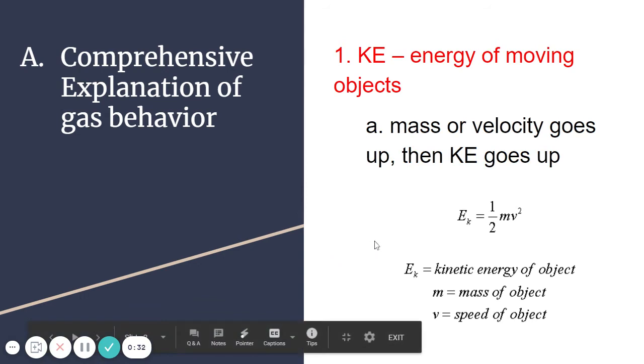We can calculate how much kinetic energy they have through the equation you see here. One half the mass times the velocity squared. We can calculate the energy, or vice versa. If we want to know how fast something is moving, we can rearrange the equation to insert energy and mass to find how fast something is moving.